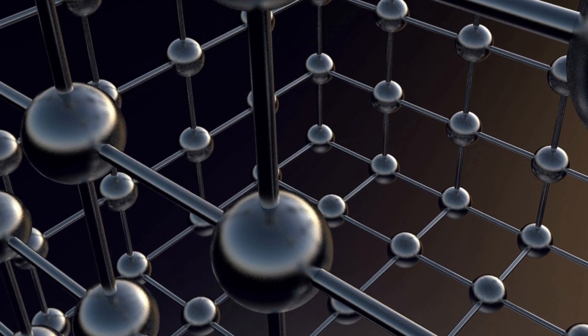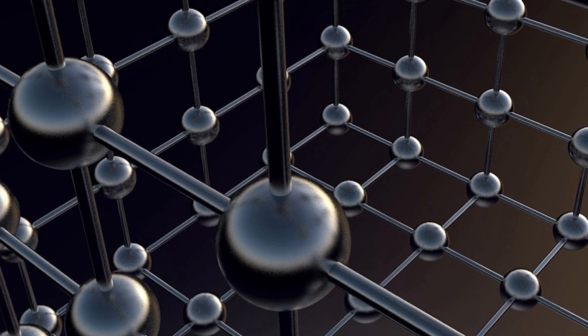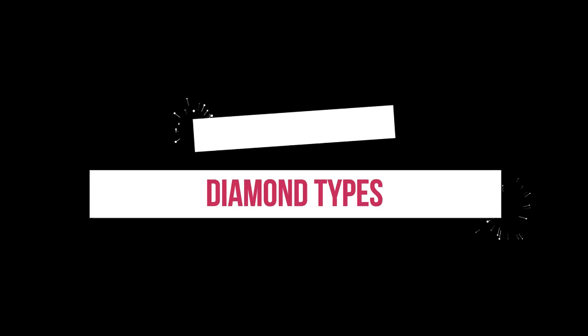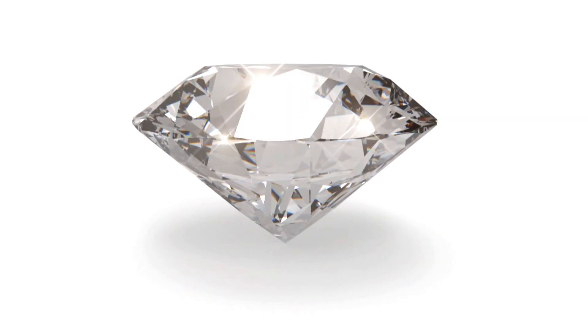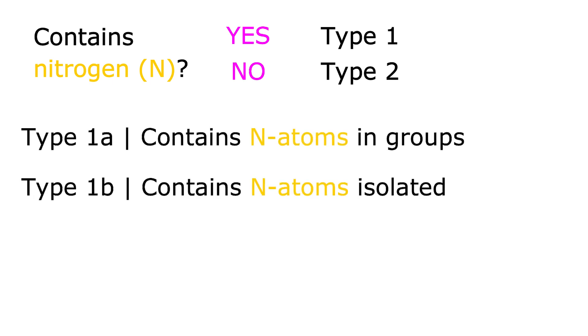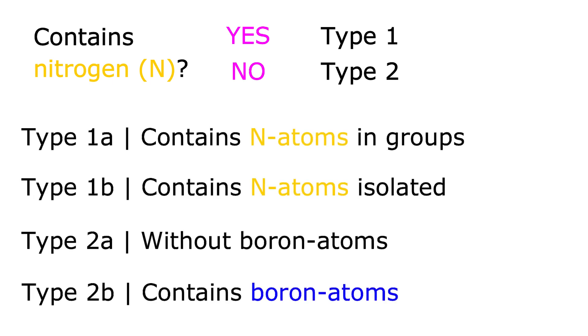In order to understand how it works, you need to know the four types of diamonds. Diamond types. Already in the 1930s did scientists notice that certain diamonds show specific properties. First, based on the occurrence and the absence of nitrogen, diamonds are classified as type 1 or type 2. Then they are subdivided once more according to the arrangement of nitrogen atoms and the occurrence of boron.